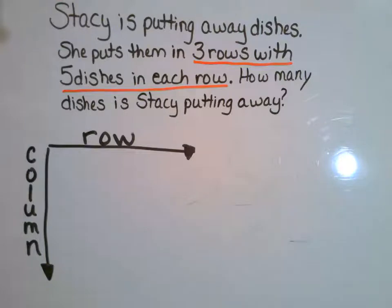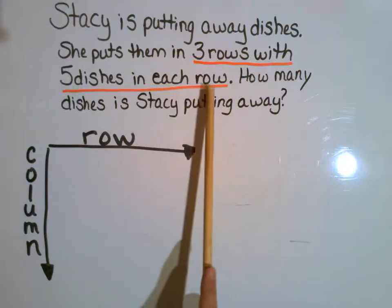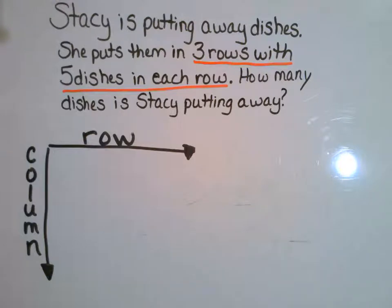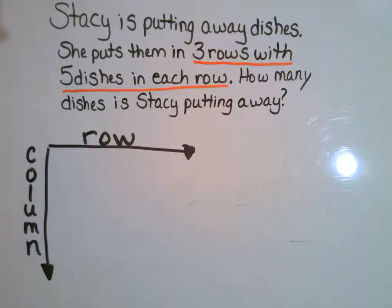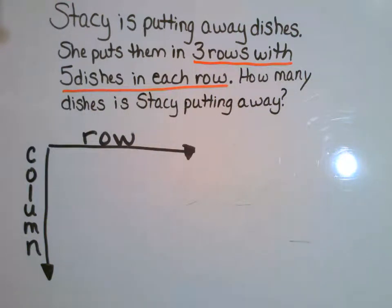Okay boys and girls, we're back. Now what we're going to be doing, we are going to be using an array to solve a word problem. Here's our word problem: Stacey is putting away dishes. She puts them in three rows with five dishes in each row. So how many dishes is Stacey putting away? I want to make the visual with the array, then use that repeated addition strategy to solve it. I underlined three rows with five dishes in each row — that's giving me the idea of how I need to build this particular array.